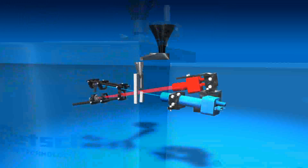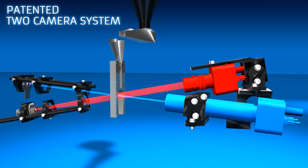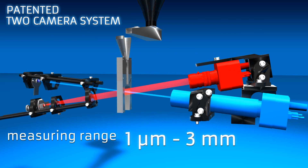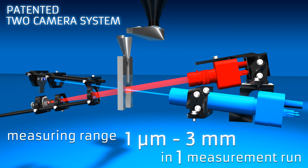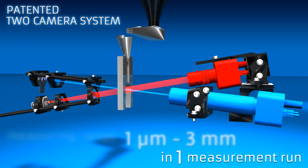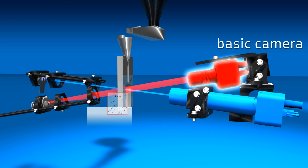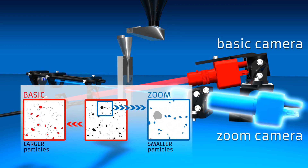Thanks to the patented two-camera system, the CamSizer XT covers an extremely wide measuring range from 1 micron to 3 millimeters in one measurement run. A basic camera detects larger particles, whereas a specially designed high-resolution camera analyzes small particles accurately.